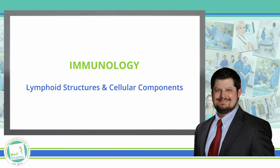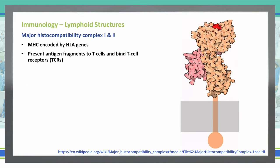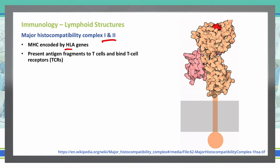Let's talk about the major histocompatibility complexes. We have MHC1 and MHC2. These are all encoded by our HLA genes, and they function by giving antigen fragments to T cells, which then bind to the T cell receptors. You can see in this drawing that the red spot represents a peptide being taken in by the MHC protein attached to the cell membrane, which will then present those fragments to T cells and the T cell receptors.